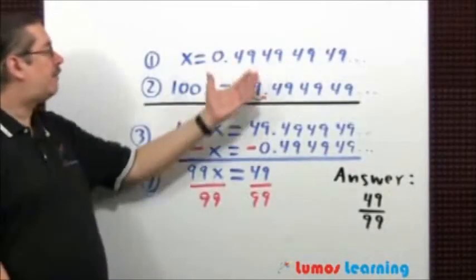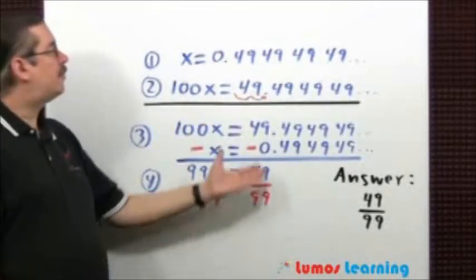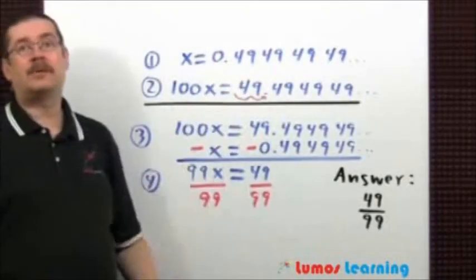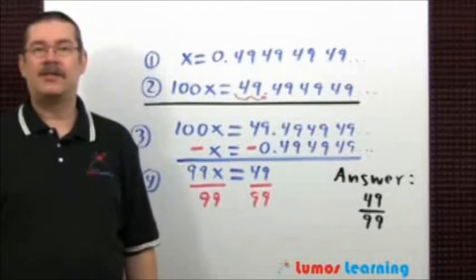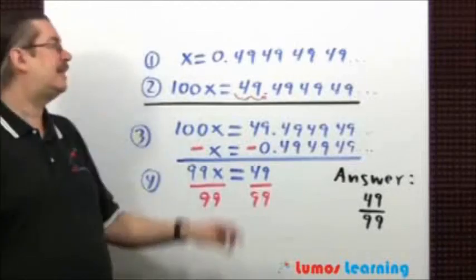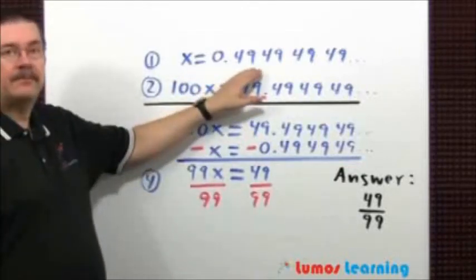Here's the procedure you need to follow to convert your repeating decimal into a fraction. The first step is to let x equal the repeating decimal.